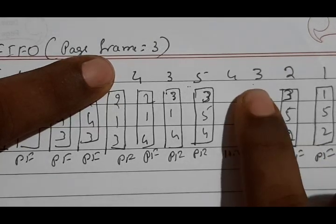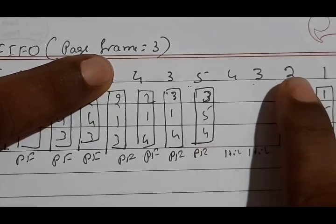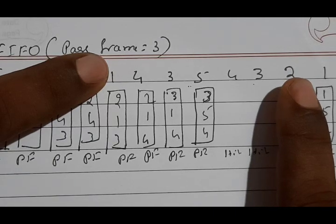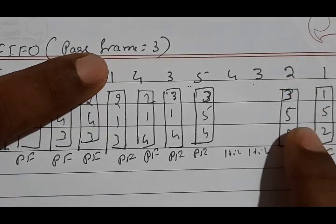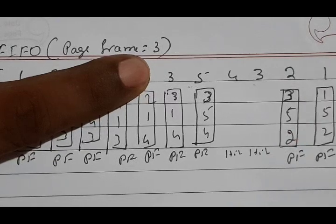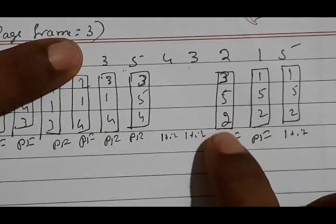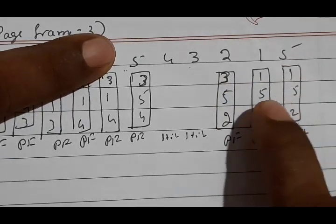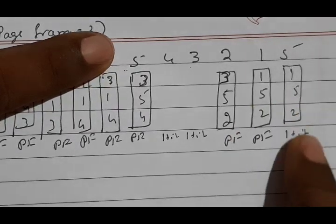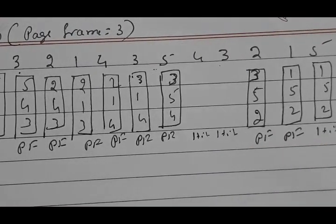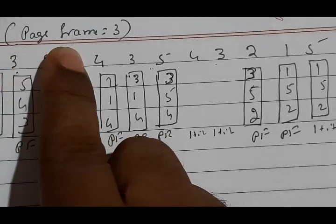Next, page 2 — replace in place of page 4 with 2. Next, page 1 is not present — in place of 3, replace with 1. Next, page 5 is already present — no replacement. Counting all page faults: 1, 2, 3, 4, 5, 6, 7, 8, 9, 10 — so 10 page faults occurred in FIFO with three page frames.